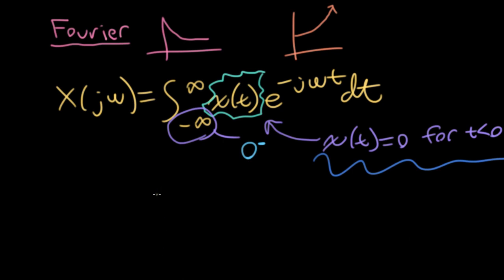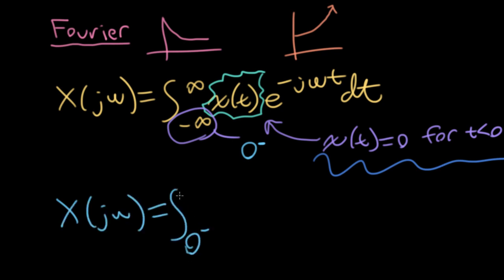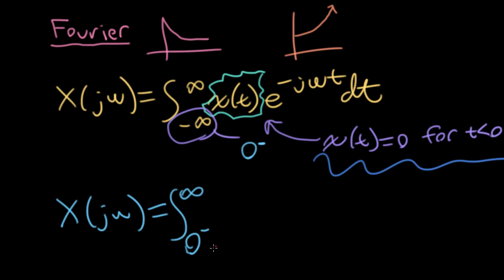I'm going to replace the lower limit with 0 minus — I'll talk about what that minus actually means in a second. We're going to take a modified Fourier transform, cropped at the lower limit of 0. The little minus means I want to make sure that 0 point is included in the integral, so if we are taking an integral of a delta function at 0, that delta function is included. This is something we only need to worry about if we have strange singularities at the origin; in ordinary calculus, you wouldn't need to worry about this.